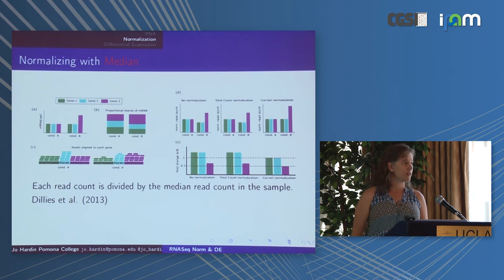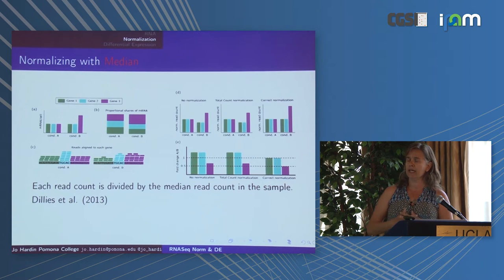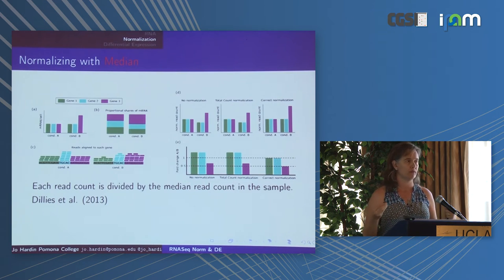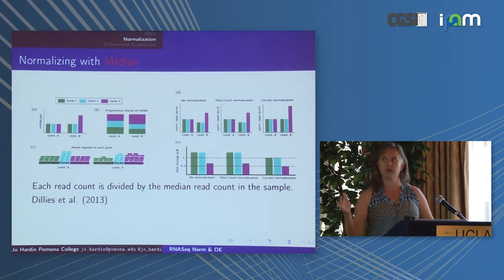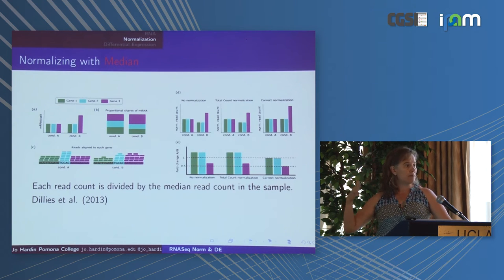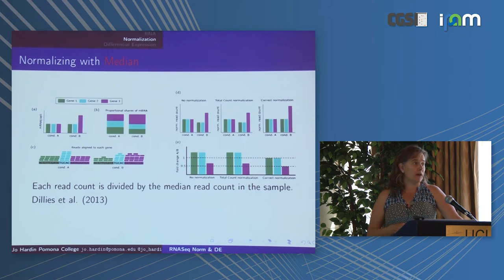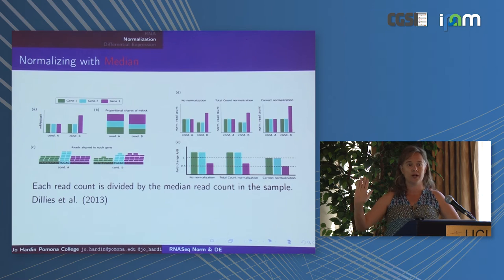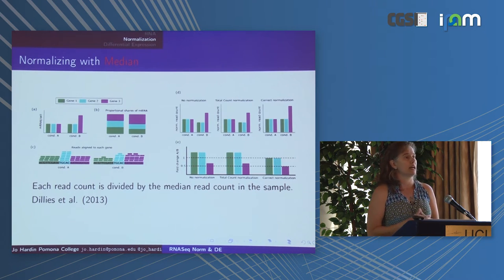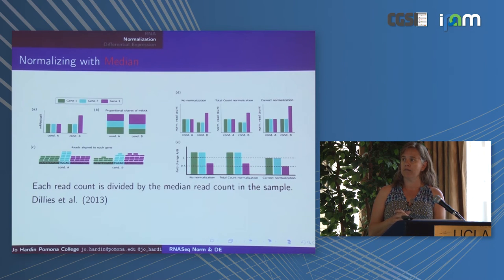Another method for normalizing is median normalization. We divide by the median count. In this example it's kind of trivial — we'd divide by the turquoise gene's count to get it to equal 1. If the turquoise gene equals 1 in both conditions, we have an apples-to-apples comparison and correct normalization. Median normalization is widely used; sometimes the 75th percentile is used instead of the median because some samples have lots of zeros.